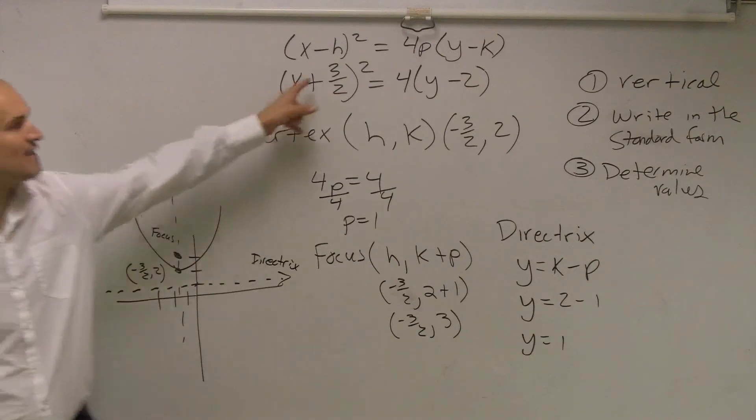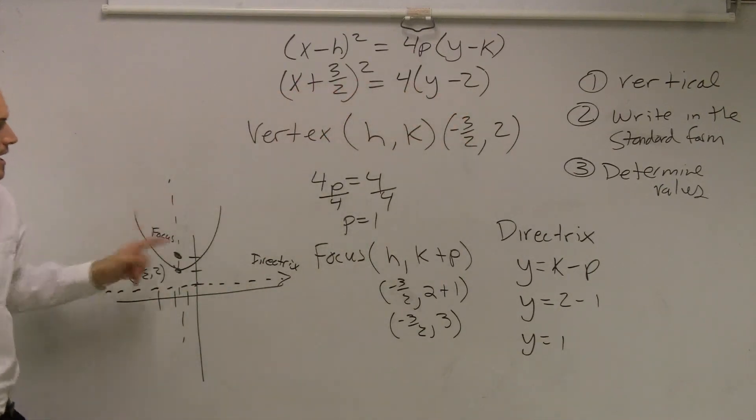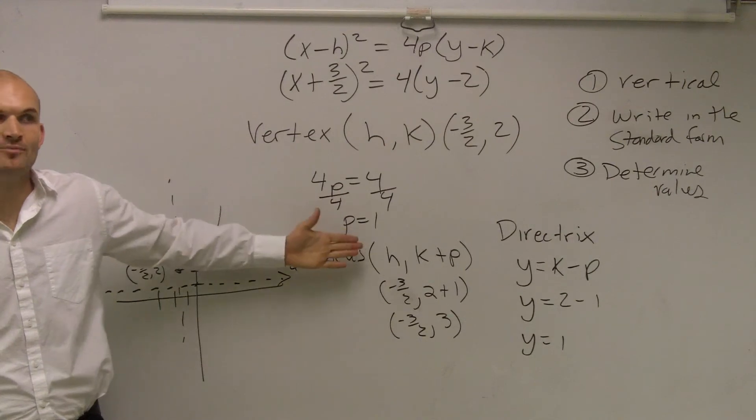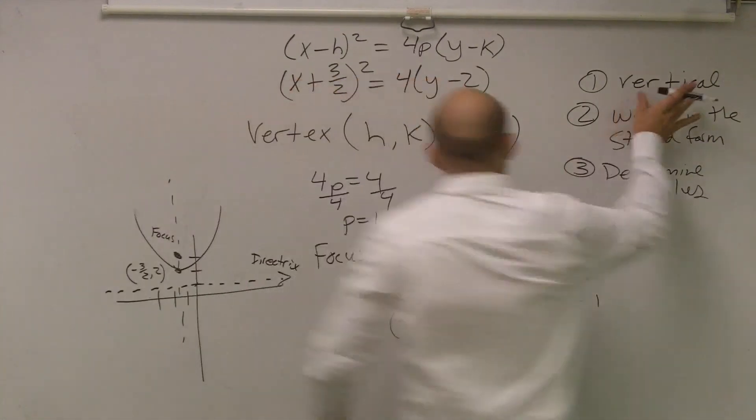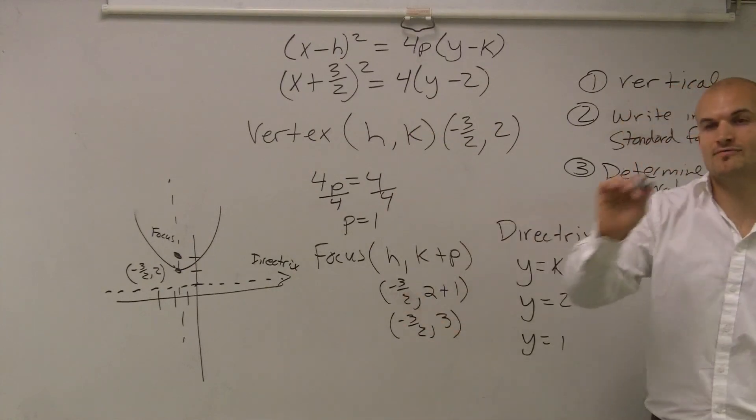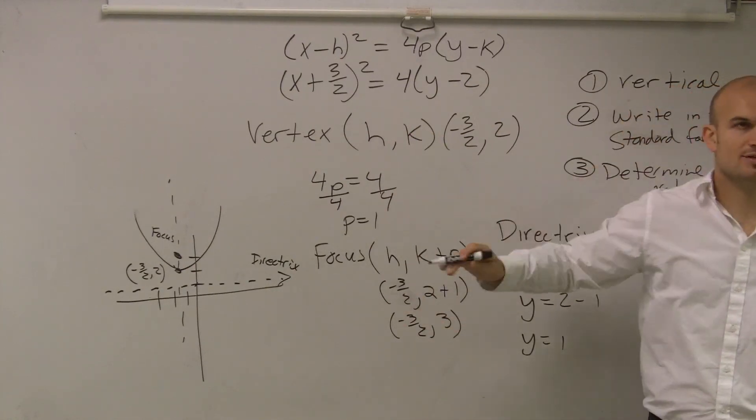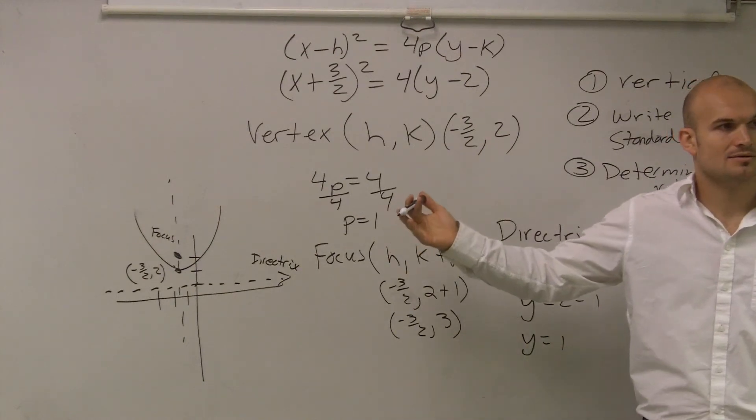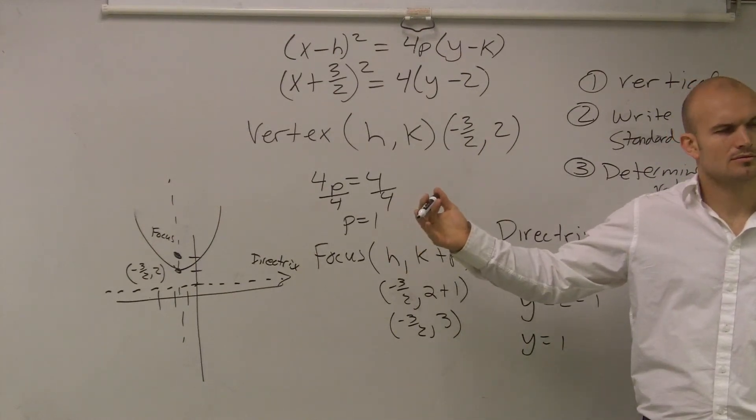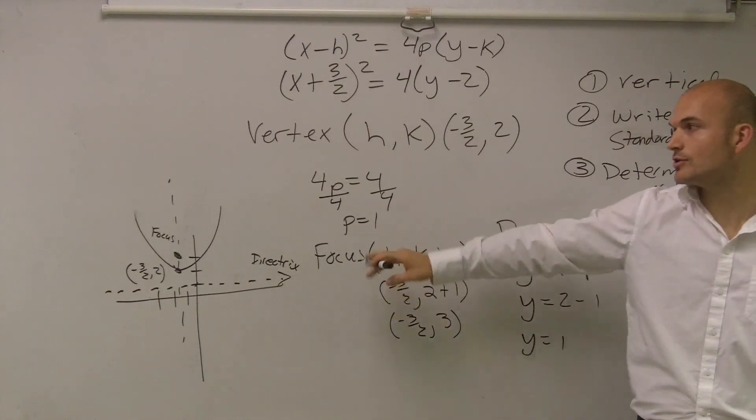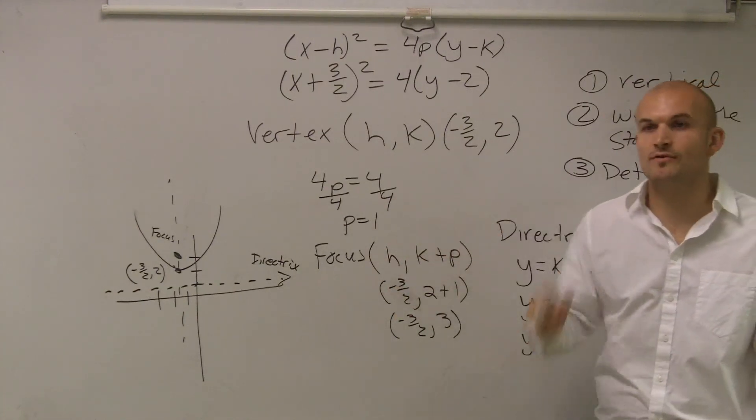So I have my vertex, which I found, which is my h and my k. I determined the value of p, and that value of p, since I knew it was a vertical parabola, that just told me to add and subtract to my y coordinate of my vertex to find my focus and directrix.